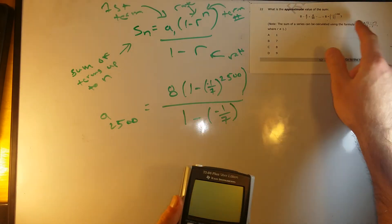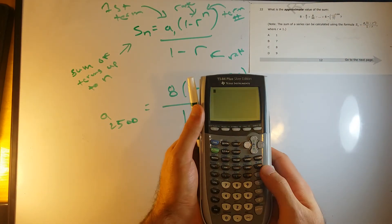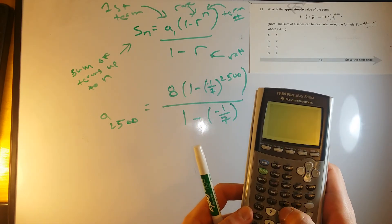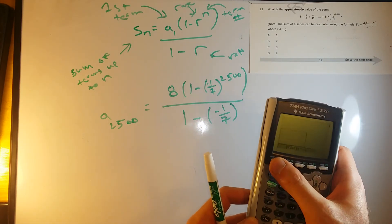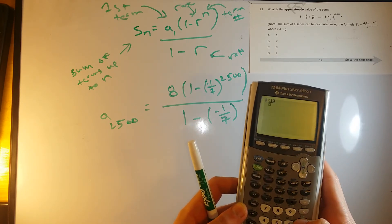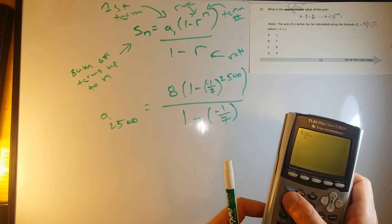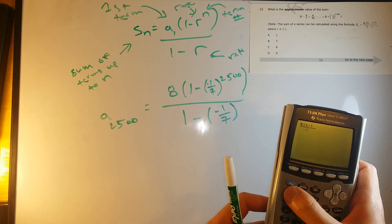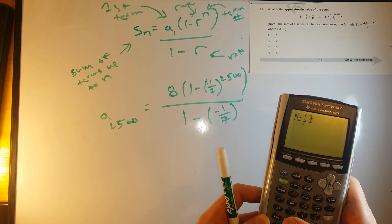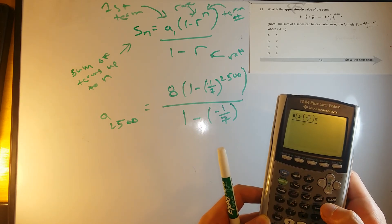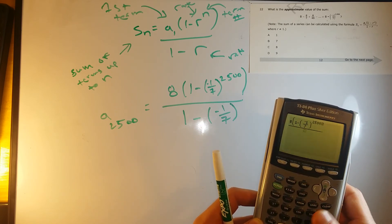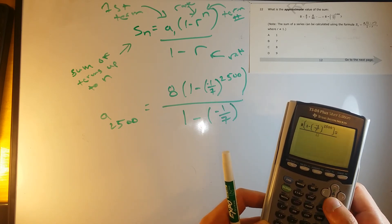So alpha Y equals 8 times 1 minus, I'll do alpha Y equals again. You could just do negative 1 divided by 7, but I'll just use our fraction key. This is all raised up to the 2,500.